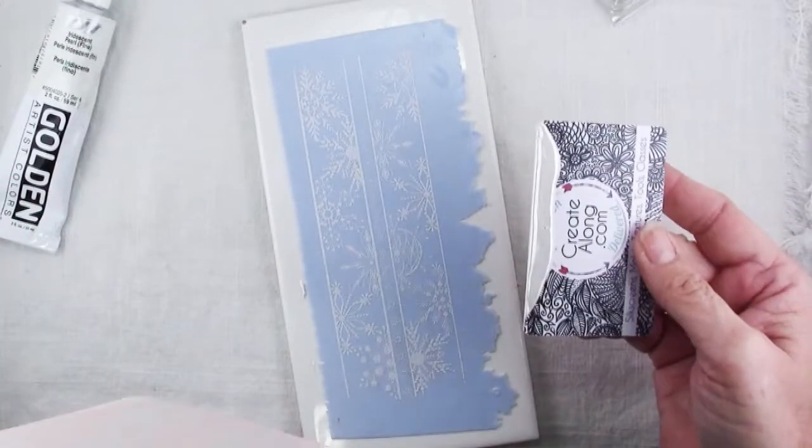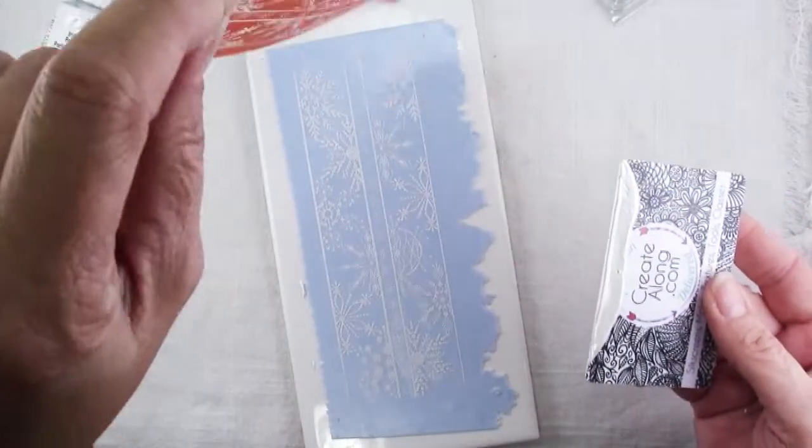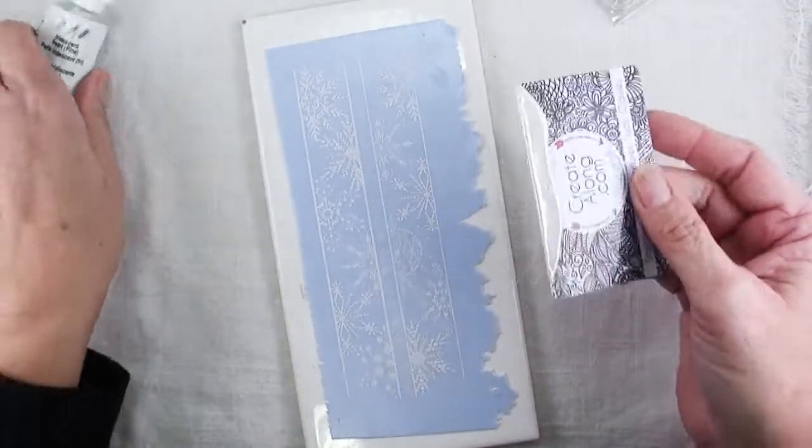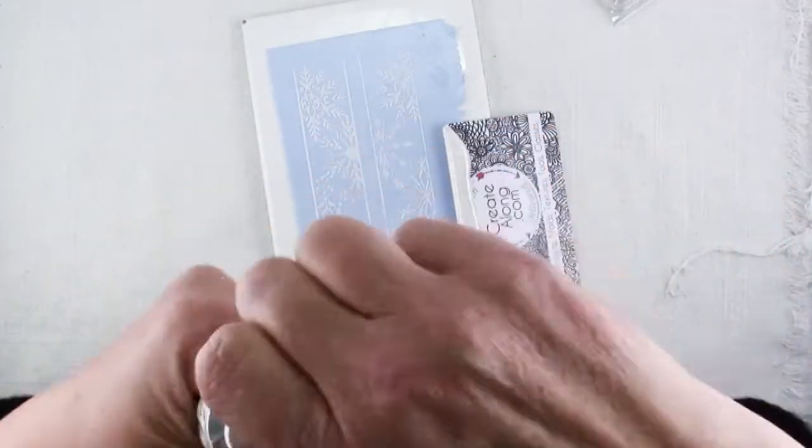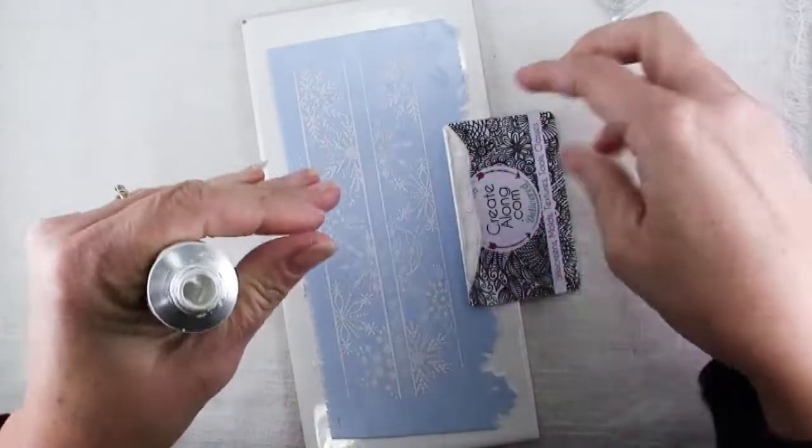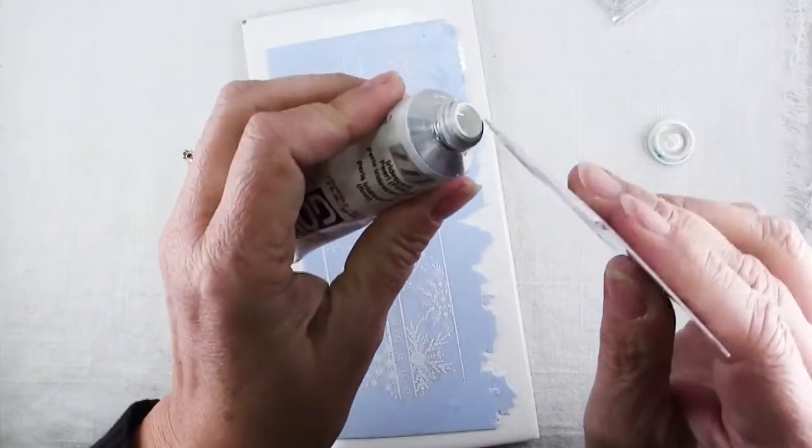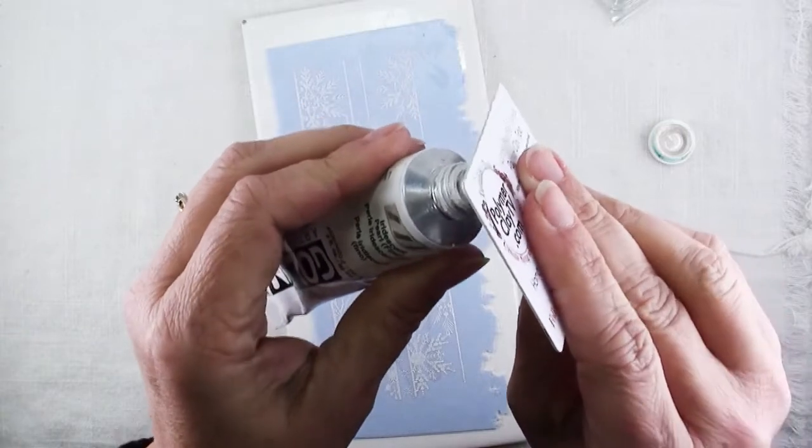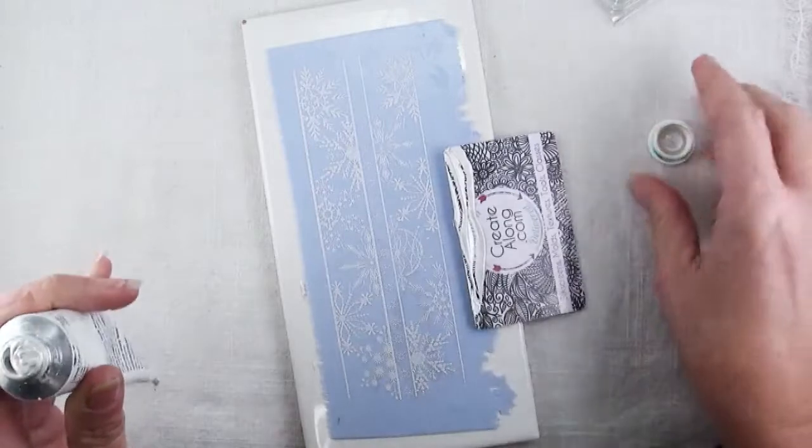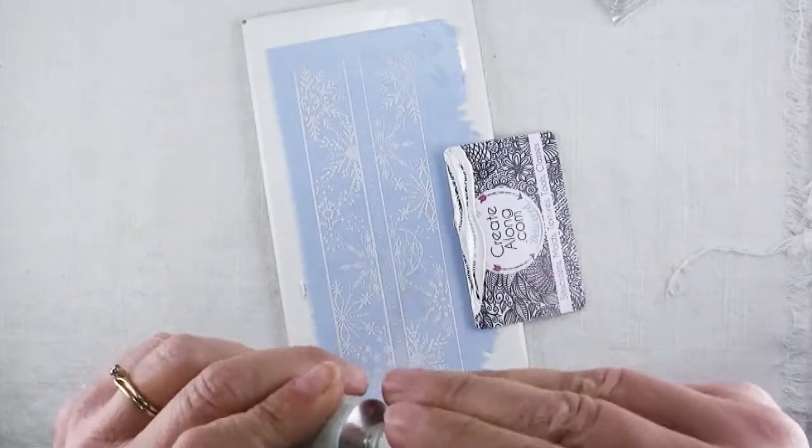Peel that up and immediately get your silkscreen into water so that the paint doesn't dry on there. I've got all this excess, I use hardly any paint at all. I put it right back into the tube as much as I can. Now you just need to wait for that to dry.